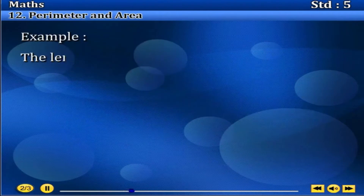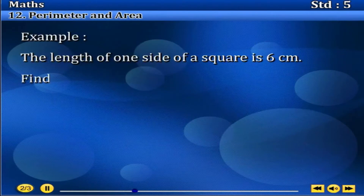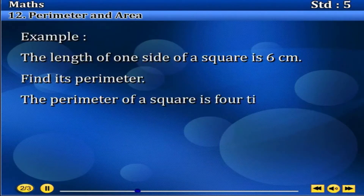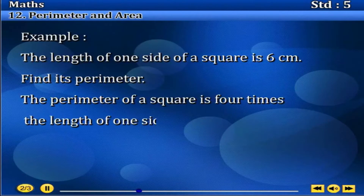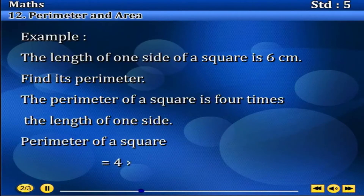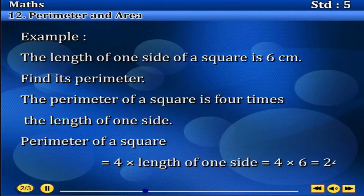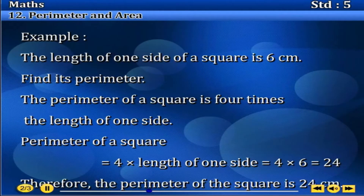Example. The length of one side of a square is 6 cm. Find its perimeter. The perimeter of a square is 4 times the length of one side. Perimeter of a square equals 4 into length of one side, equals 4 into 6, equals 24. Therefore, the perimeter of the square is 24 cm.